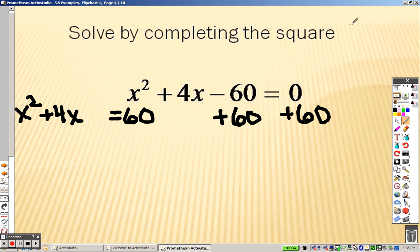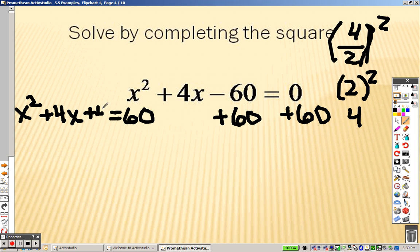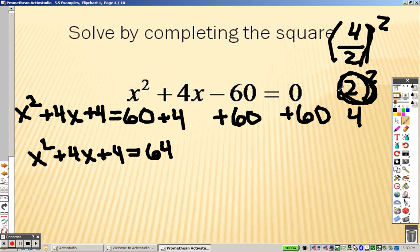So it's b over 2 squared. So that's like saying 4 divided by 2 squared, and 4 divided by 2 is saying 2, so I'm looking for 2 squared, and 2 squared is 4. So that means I need to take a 4 and add a 4 to this side and add a 4 to this side. So I end up getting x squared plus 4x plus 4 equals 64. Whatever is in the parentheses is your factor. So that means this side is x plus 2 squared. Thus the term completing the squares. That equals 64.